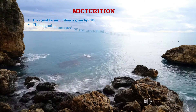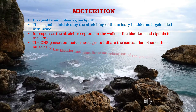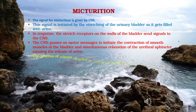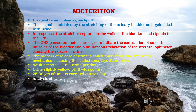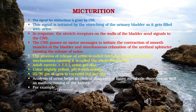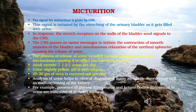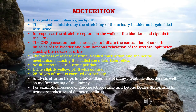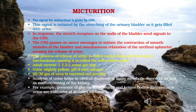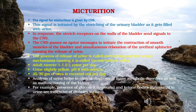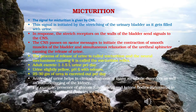The signal for micturition is given by the CNS, initiated by the stretching of the urinary bladder as it fills with urine. Stretch receptors on the walls of the bladder send signals to the CNS, which passes motor messages to initiate contraction of smooth muscles of the bladder and simultaneous relaxation of the urethral sphincter, causing the release of urine. The process of release of urine is called micturition, and the neural mechanism causing it is called the micturition reflex.